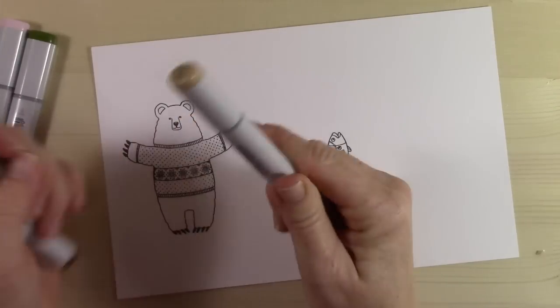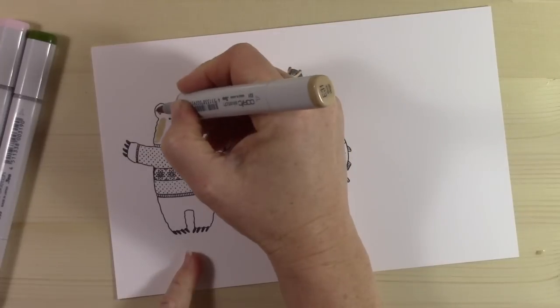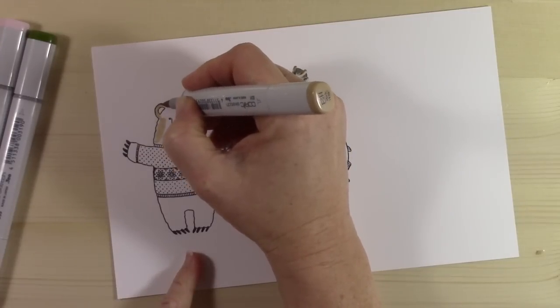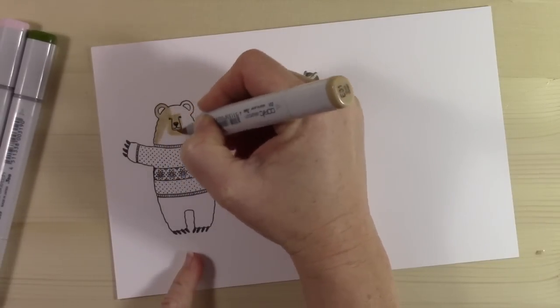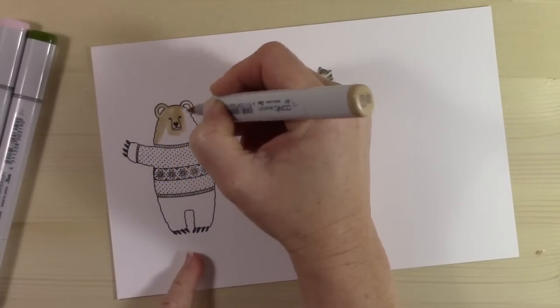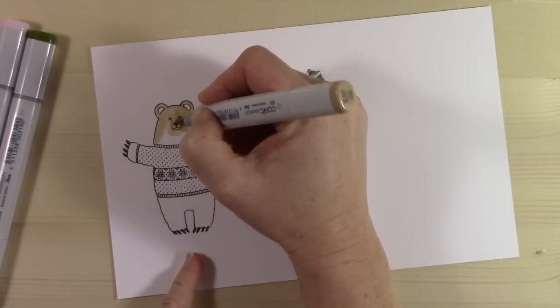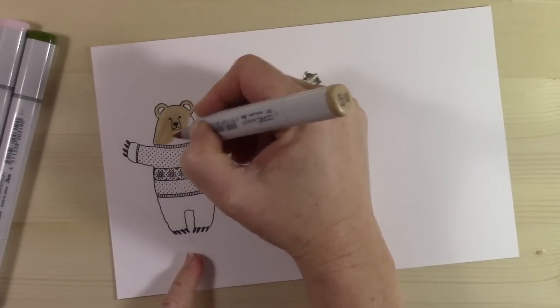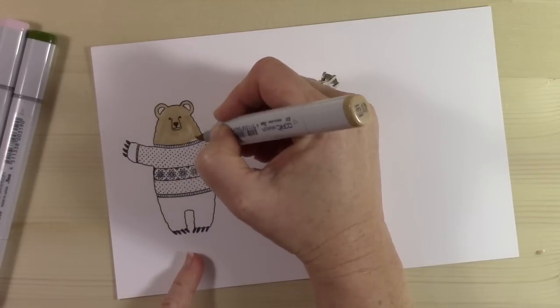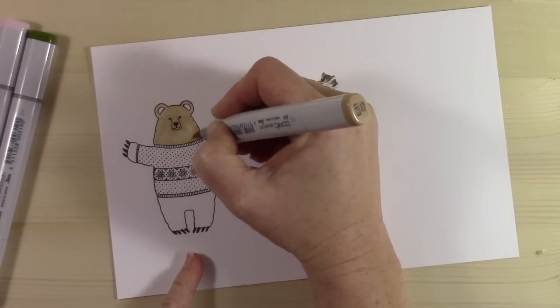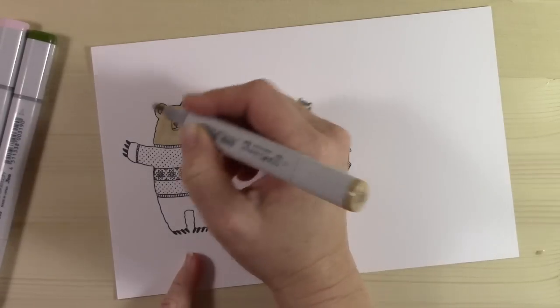We're going to start out coloring the bear and I'm going to use E31, 35, and 37. I've received a lot of comments and messages about my Copic coloring, how I learned to do Copic coloring, and why do I do it. So I'm going to talk a little bit about that while I'm coloring. I always start with my lightest color almost always, and then I blend in the other colors. I just cover the base of my project with the lightest color.